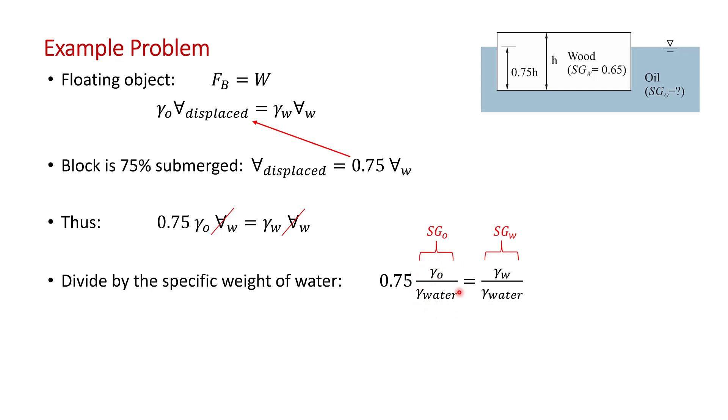And here's the specific gravity of oil that we're after. And here's the specific gravity of the wood that we're given in the problem is equal to 0.65. So the specific gravity of the oil is just the specific gravity of the wood divided by 0.75, the fraction that's submerged. And we get the specific gravity of the oil equal to 0.867, which is the answer.